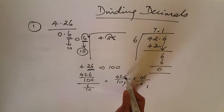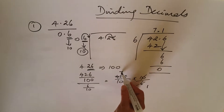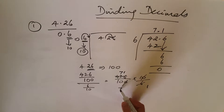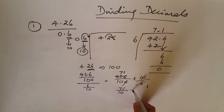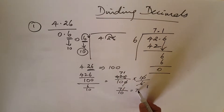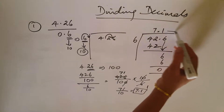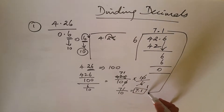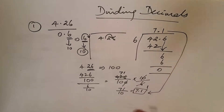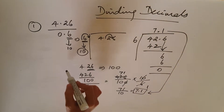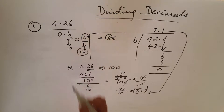So we get: 6 into 4.26 gives us — 7 sixes are 42, and 1 six is 6 — resulting in 71 over 10. That equals 7.1. You see this same value comes out. This is the second method.